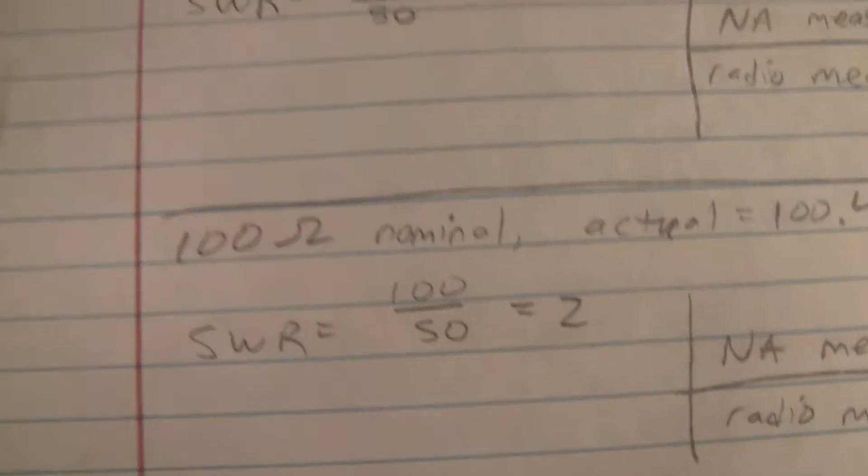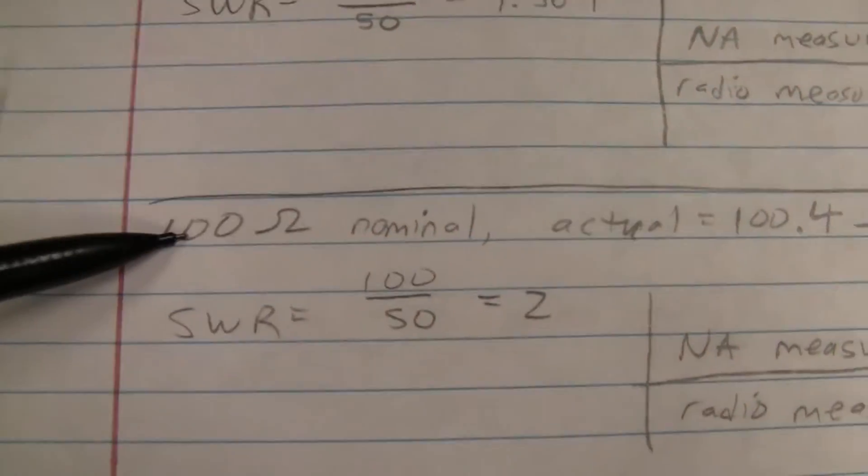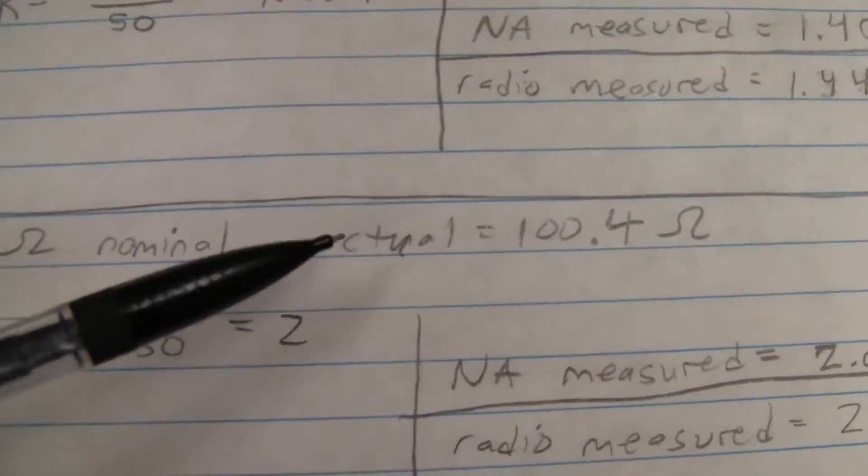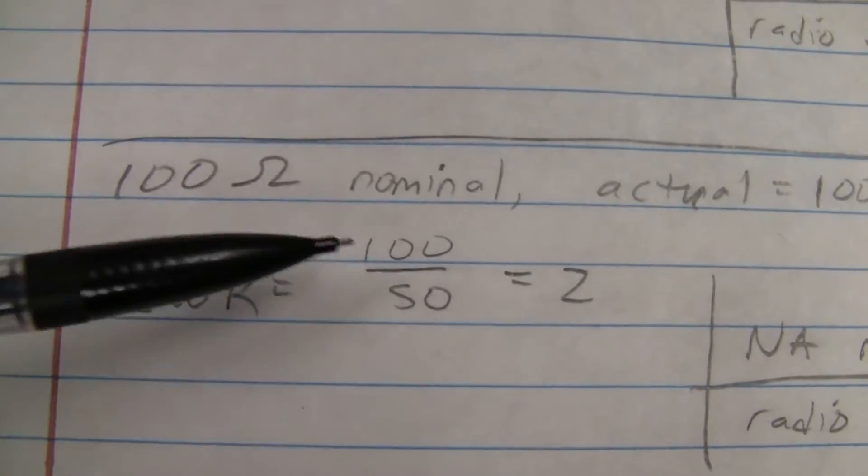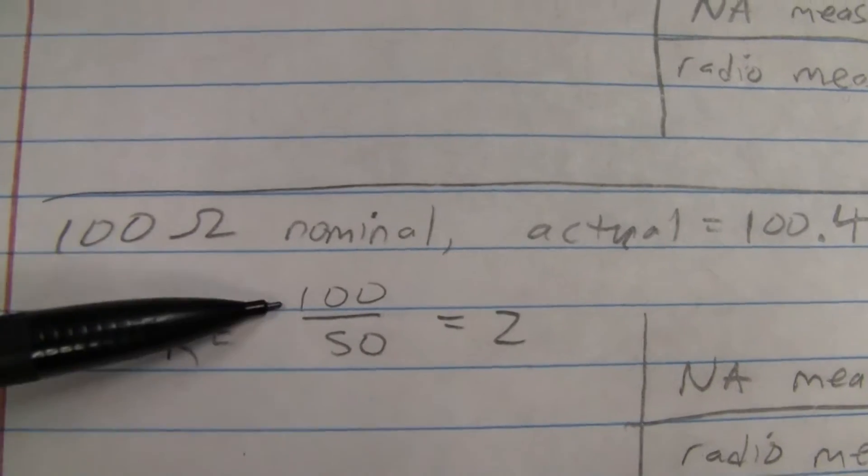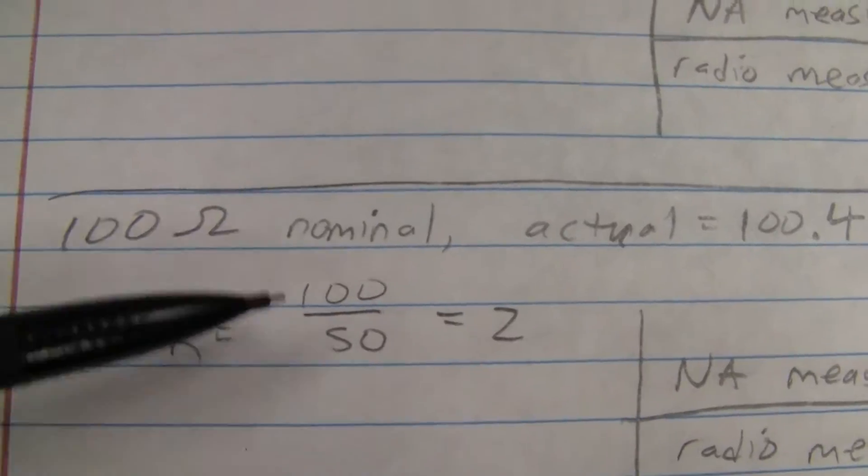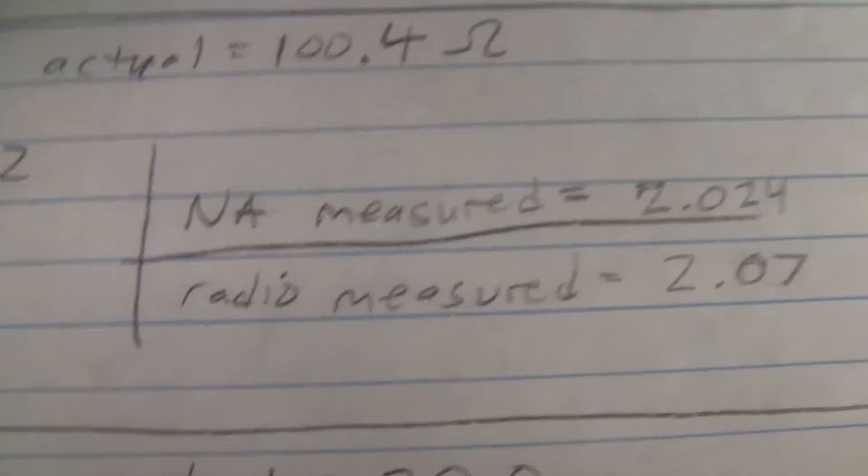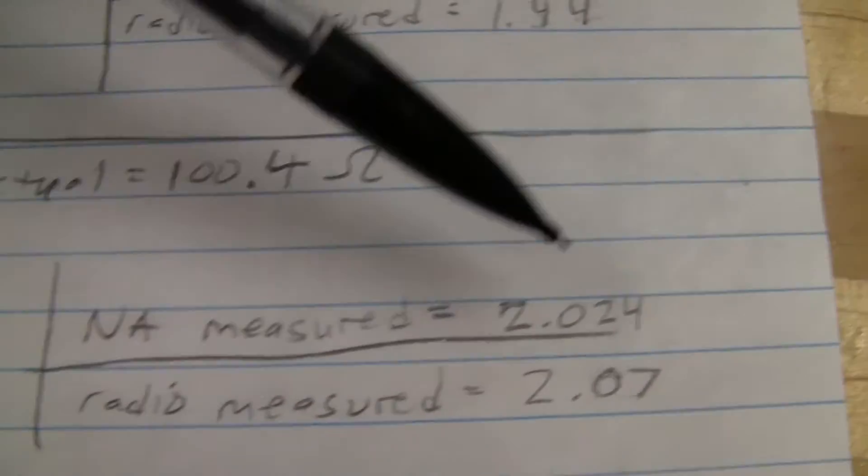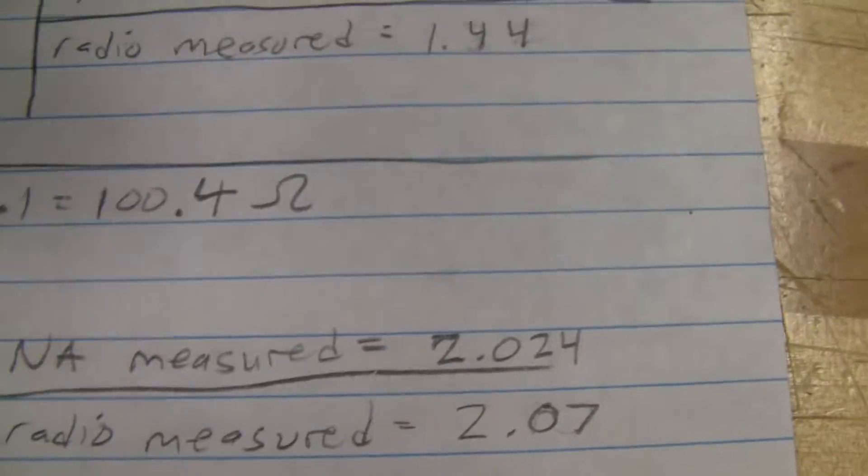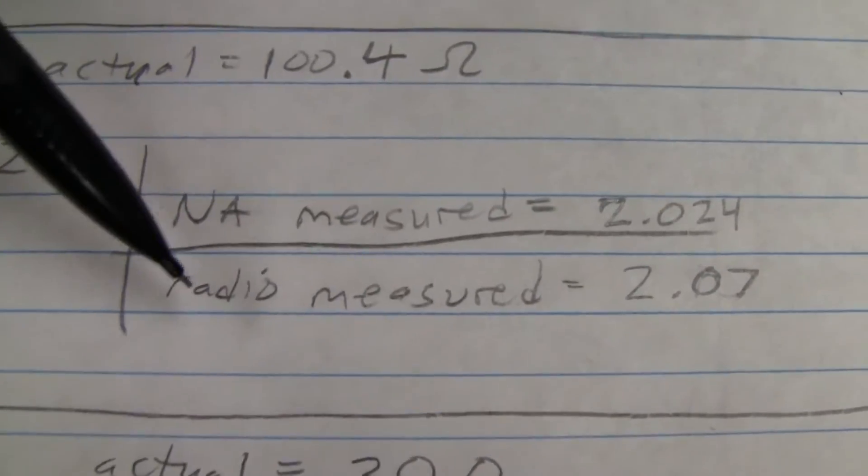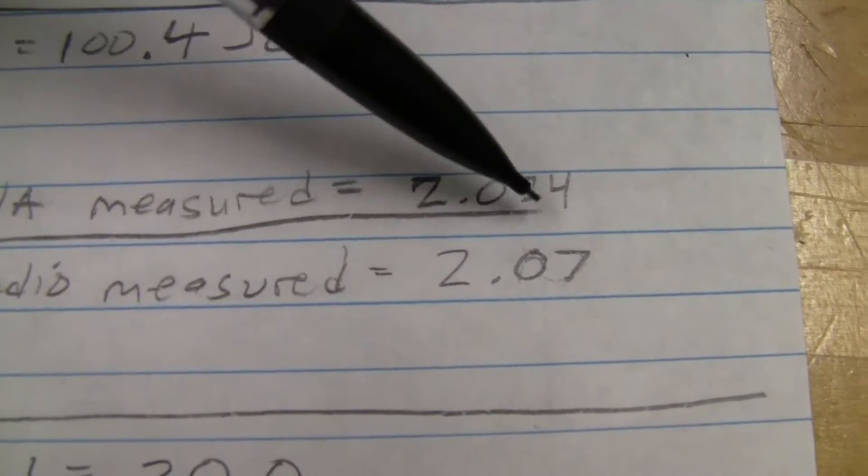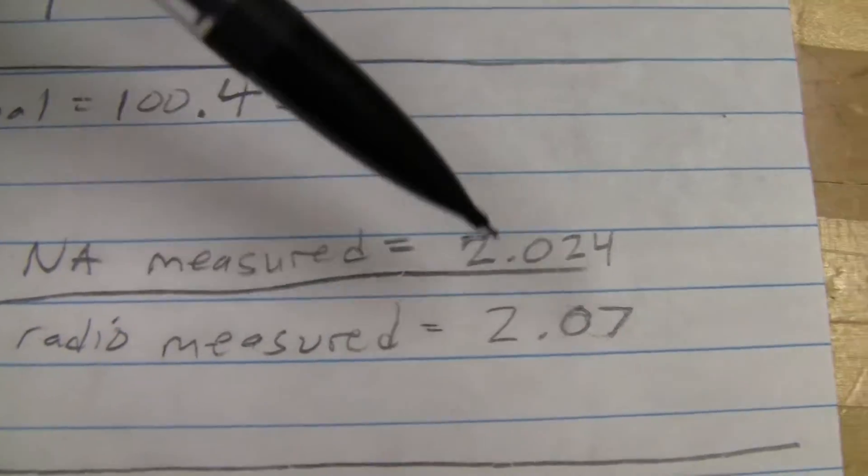If we come over here on paper, based on my calculation, it's a 100-ohm nominal resistor, and I measured with a multimeter and we have just over 100 ohms. So SWR, we'd expect whichever number is greater. We're using load impedance, which is greater. So 100 over 50 is 2. And so we measure with the network analyzer, we got 2.024. It's a little bit different now. I did this earlier, but it's generally the same. When I measured with the radio, I got 2.07. So pretty close here.